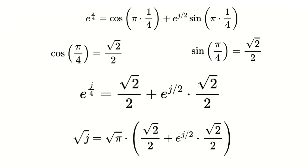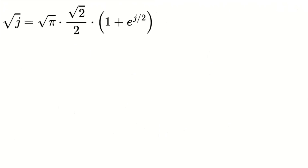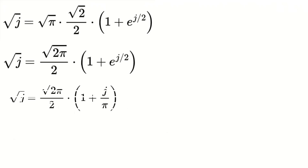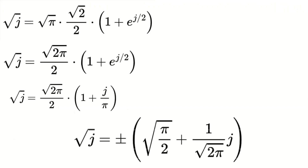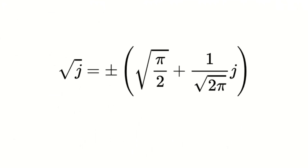Substituting back into our expression for √j, we get √π times (√2/2 + e^(j/2)·√2/2). Factoring out √2/2, we get √(2π)/2 times (1 + e^(j/2)). Since e^(j/2) equals j/π, we substitute this in, giving us the same result as before. So using the logarithmic method, we again find that √j equals ±(√(π/2) + 1/√(2π)·j). This perfectly matches the result from our direct method, confirming the consistency and elegance of this virtual number system.